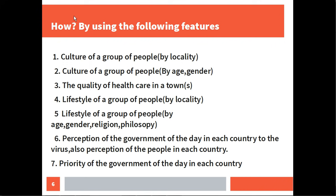The fourth point is the lifestyle of a group of people by locality. I have differentiated lifestyle from culture — culture is how people behave over time, while lifestyle is how people currently behave. The fifth point is lifestyle of a group of people by age, gender, religion, and philosophy.